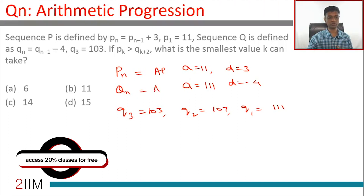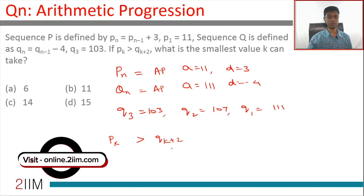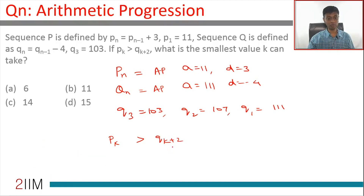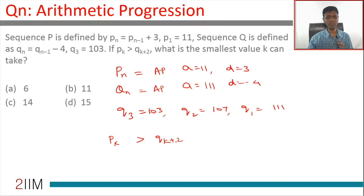Sequence qn is also an AP. We are told pk is greater than q(k+2), meaning the kth term in the first sequence is greater than the (k+2)th term of the second sequence. The first sequence is increasing and the second is decreasing, so as we go further, the first sequence grows and the second decreases. Somewhere a particular term in the first sequence will become greater than the corresponding term in the second sequence.